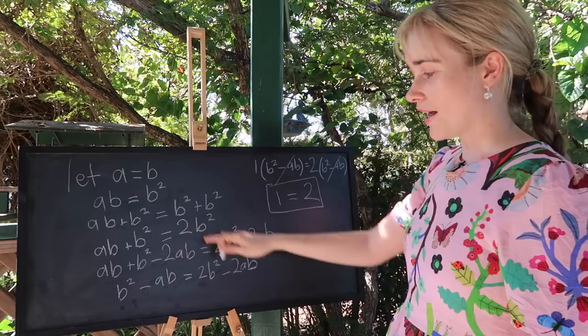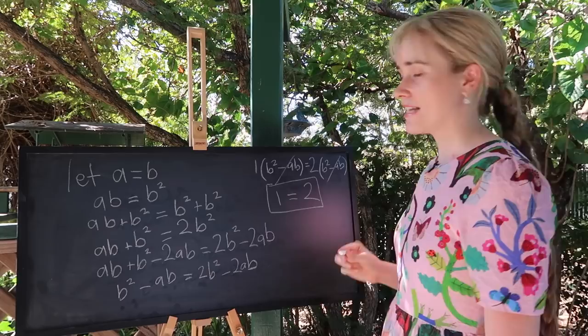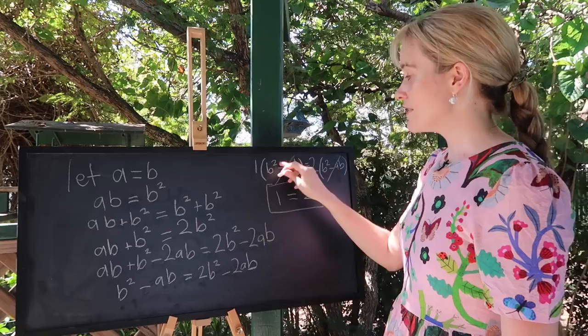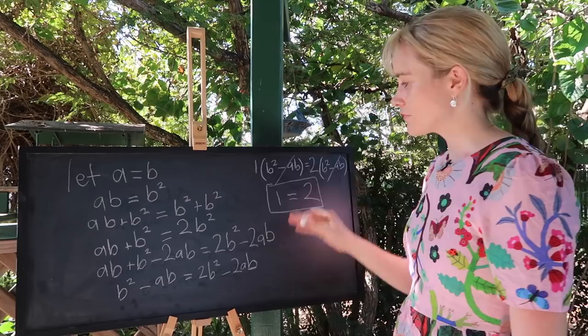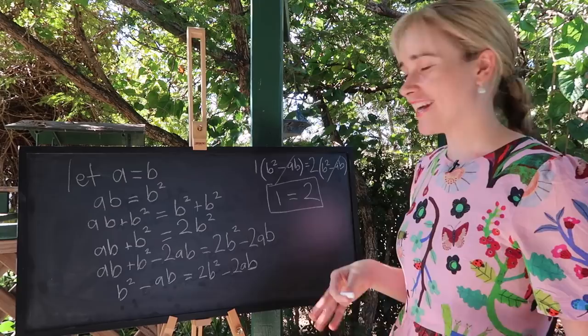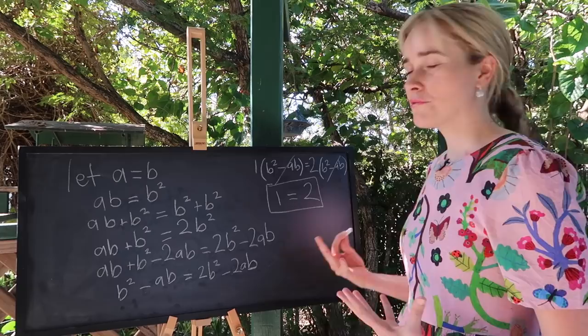I stand by that all of this algebra is correct. The issue comes in at this line here. Now we divided both sides by B squared minus AB and that would be fine as long as B squared minus AB the stuff in brackets was not equal to zero. If this stuff was equal to zero this would amount to dividing both sides by zero and as you might know dividing by zero is kind of forbidden in mathematics. The answer to that is undefined. When you start dividing by zero things in the universe stop making much sense.